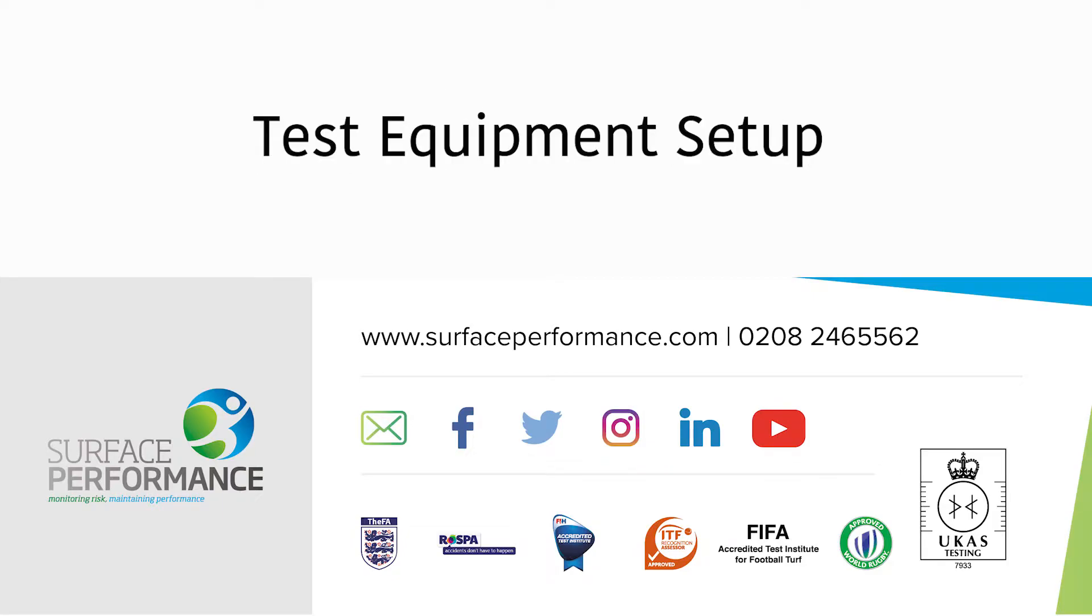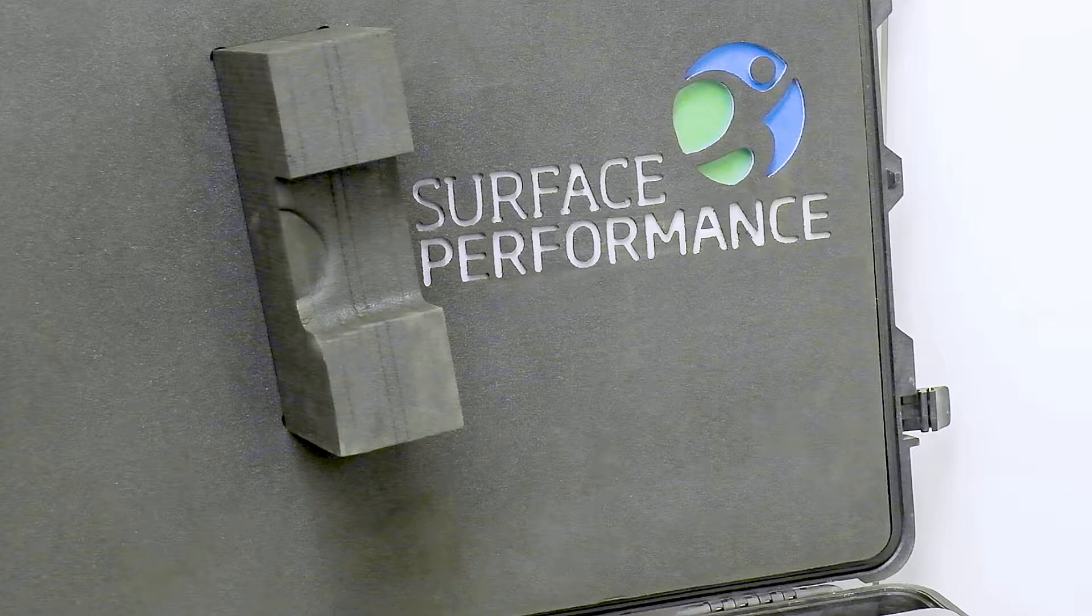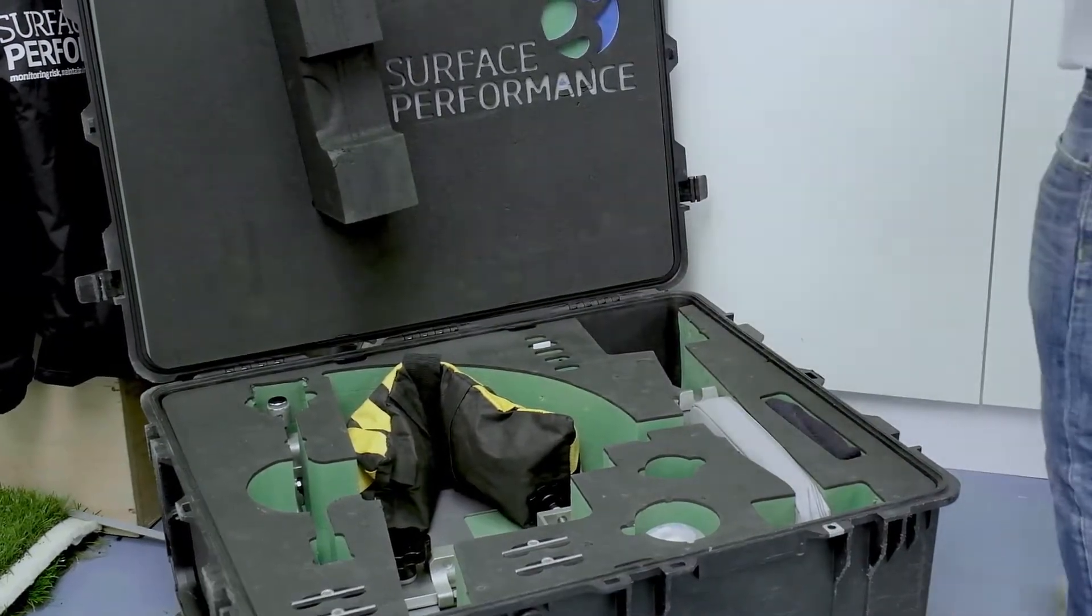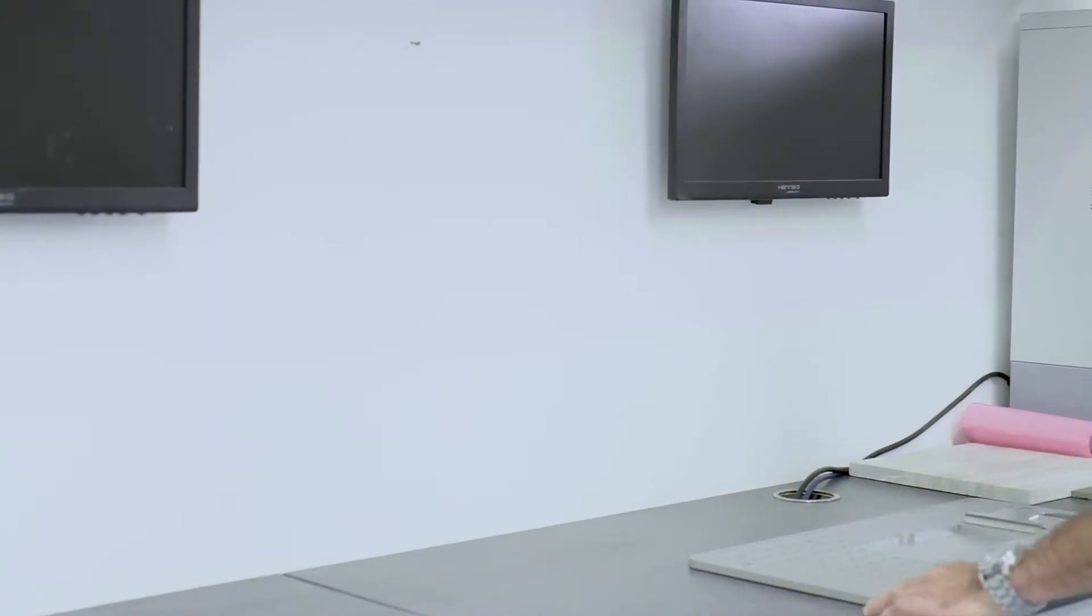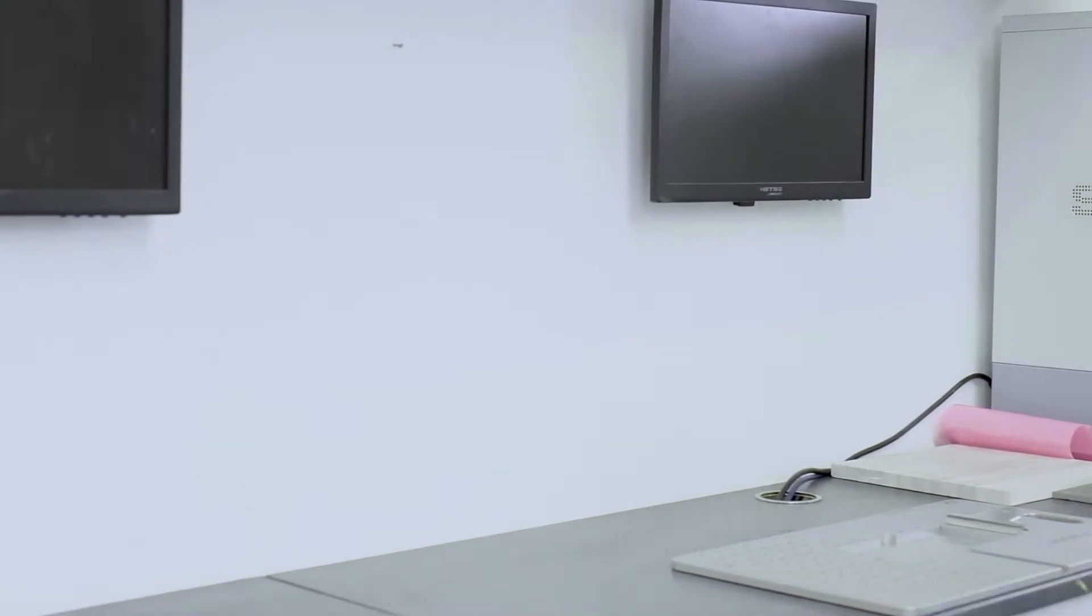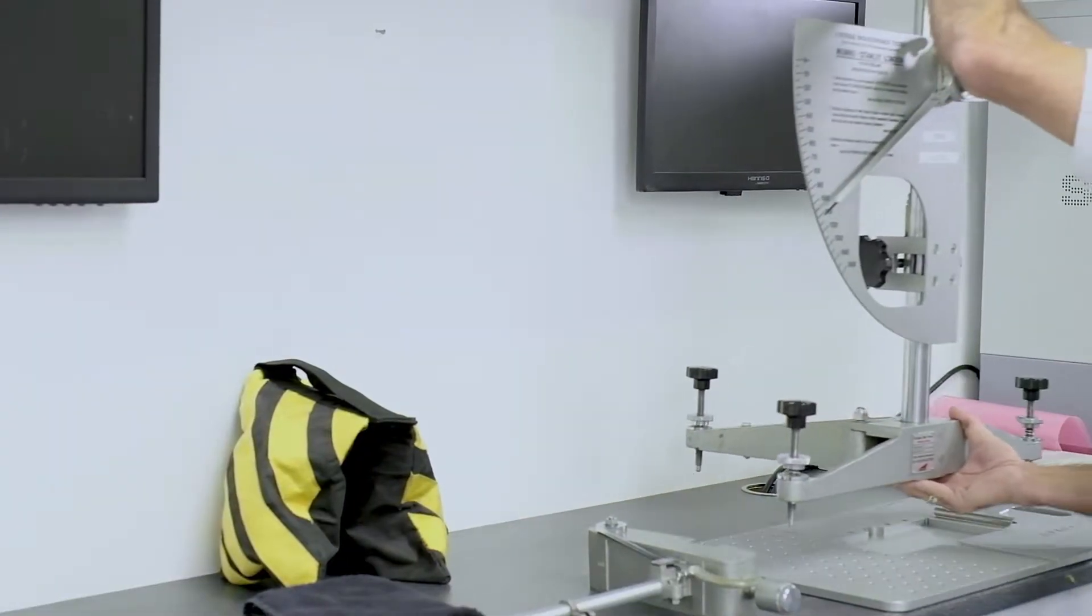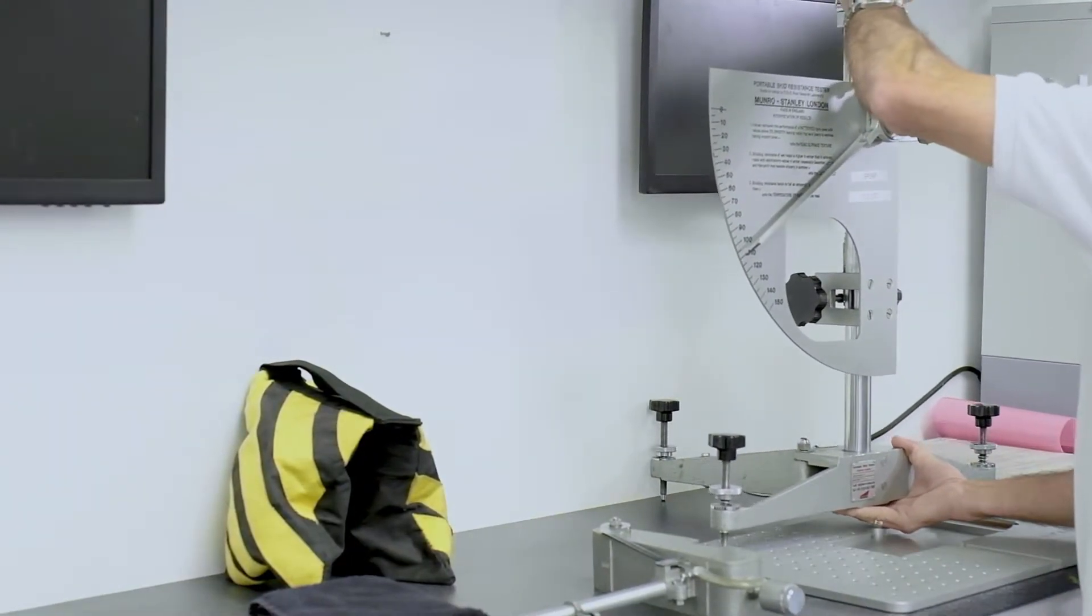Surface Performance Limited are a UCAS accredited test laboratory that operate in accordance with BS 7976 and UK slip resistance guidelines. Through employing a laboratory with slip testing within their scope of UCAS accreditation, you can be sure to obtain independent, reliable and trustworthy results.